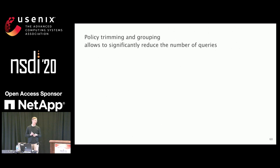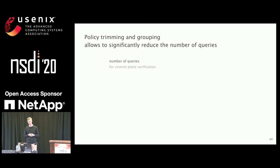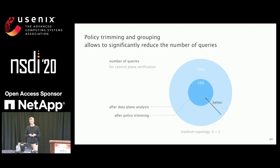For the verification part, we look at how much we could reduce the number of queries to the verifier, starting from the number of policies left in the candidate set after the switch from analysis to verification. After trimming, for a medium topology with up to two failures, we're down to 16% of the initial queries. When we also group those remaining policies, we're down to only 3.5% of the initial queries. This highly depends on the topology and on the failure model.